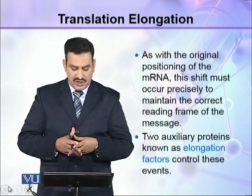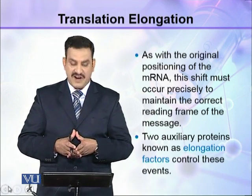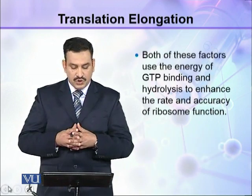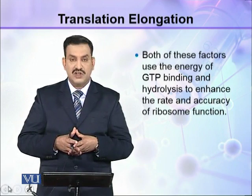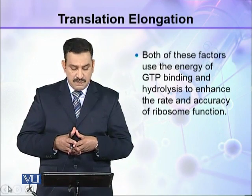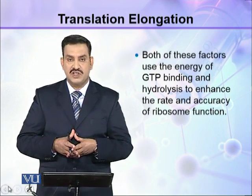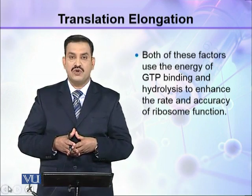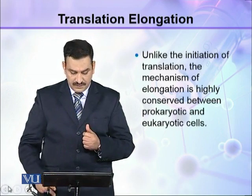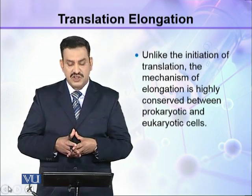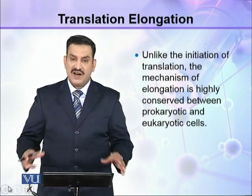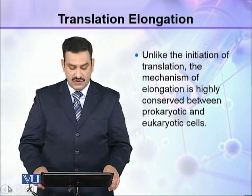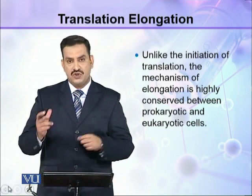Two auxiliary proteins known as elongation factors control these events. Both of these factors use the energy of GTP binding and hydrolysis to enhance the rate and accuracy of ribosome function. Unlike the initiation of translation, the mechanism of elongation is highly conserved between prokaryotic and eukaryotic cells.